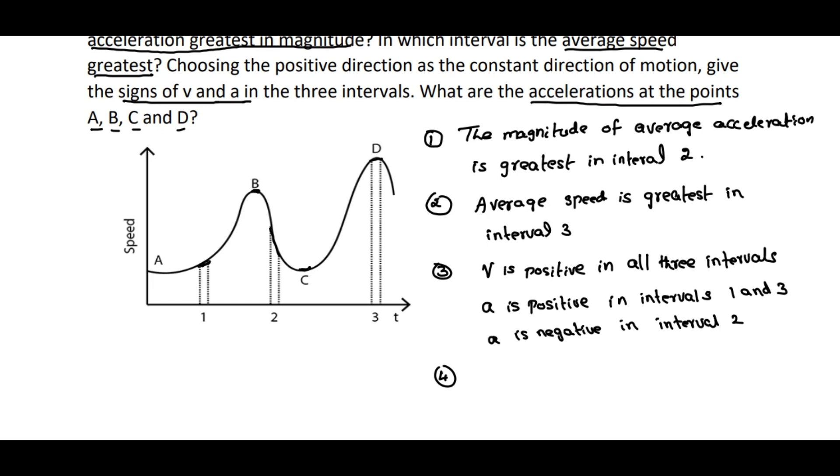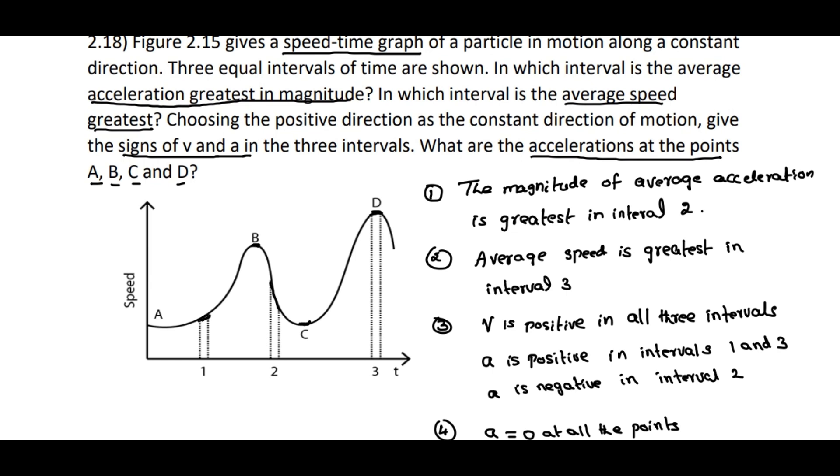At C is minimum, the slope is zero. At D again, v is maximum, the slope is zero. Therefore, a is zero at all the points—at A, B, C, and D. So this is the solution and answer in detail for problem 2.18.